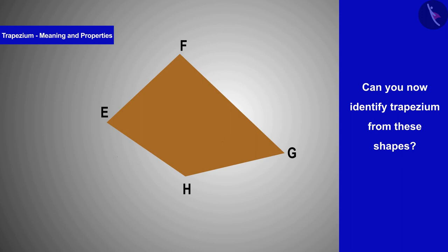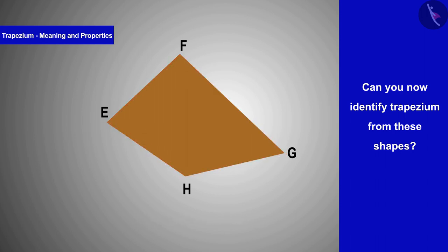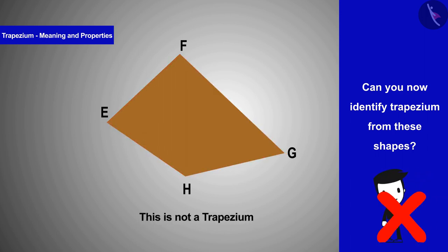Let us now discuss the brown figure. In this, we see that no pair of sides is parallel. So it will not be a trapezium.